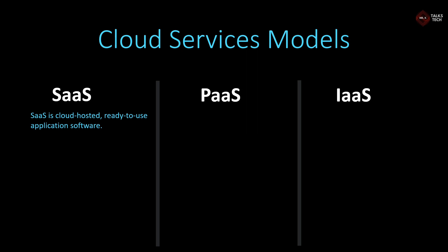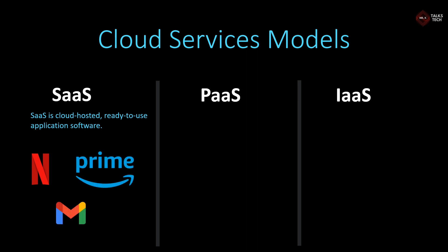Firstly, Software as a Service. Software as a Service is cloud-hosted, ready-to-use application software, which means that the software is readily available to be used by the users — basically a software is provided as a service. Some examples are Netflix, Amazon Prime, and Gmail. If you take Netflix as an example, you can subscribe on a monthly or yearly basis, where you could watch movies on a web browser or as an app on your mobile. Netflix needs a massive amount of storage to host all those movies, but when you install the Netflix app, you do not need massive storage on your phone. Instead, all the storage is taken care of by the service provider — in this case Netflix. So the user simply uses the service and just pays for it, which is called Software as a Service.